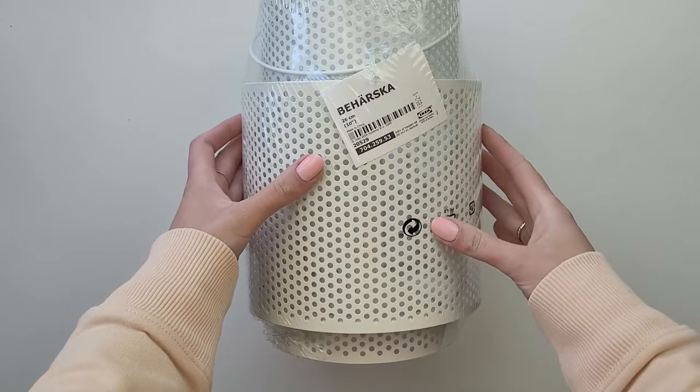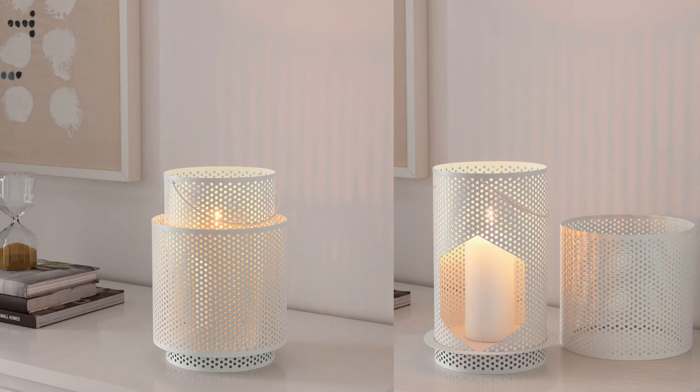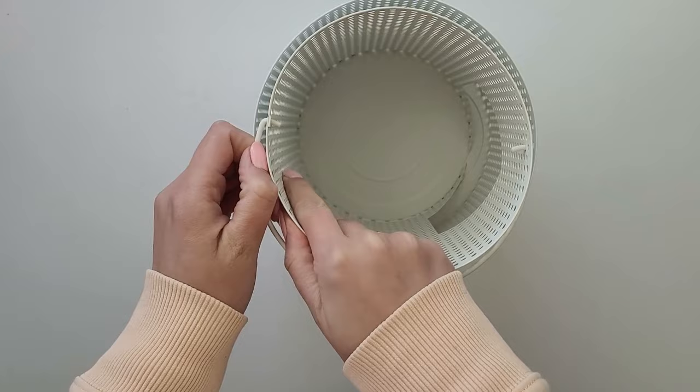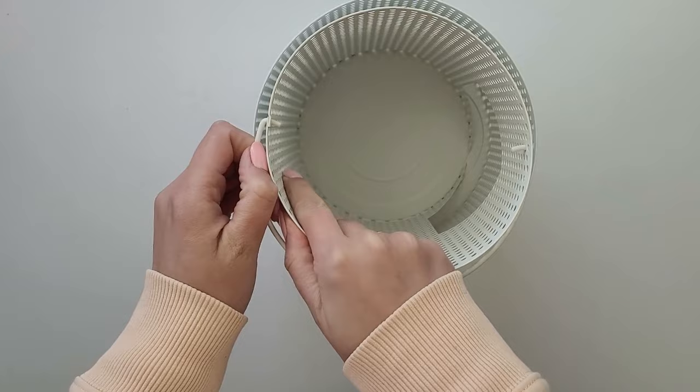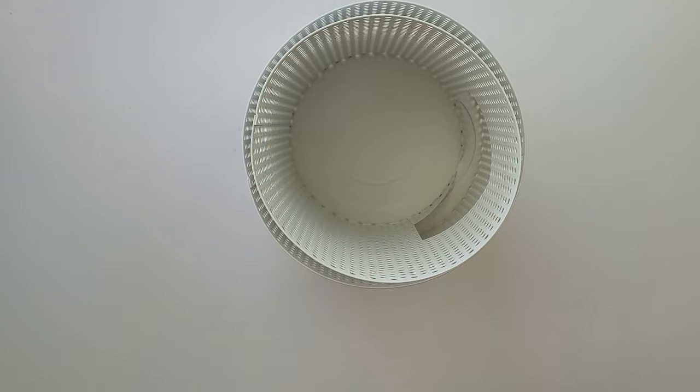This is a super quick IKEA hack. To create my new kitchen lampshades, I will be using two of these IKEA candle lanterns. They are in great size, color, and material which they are made out of. I removed all the labels and the handle.